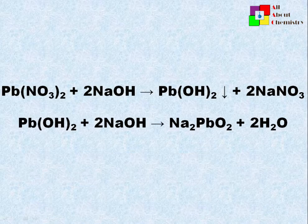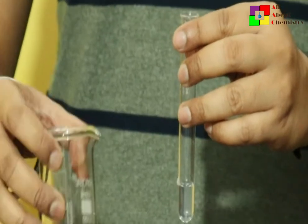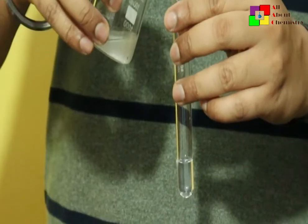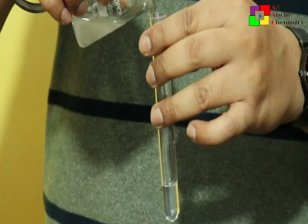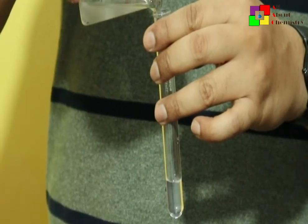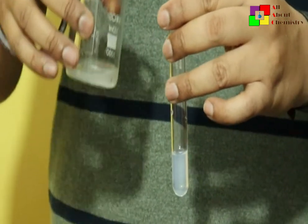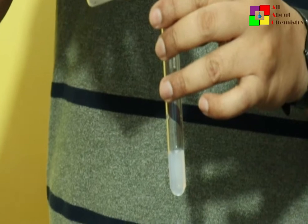When ammonium hydroxide is added to lead salts instead of sodium hydroxide, we initially get a chalky white precipitation. However, when excess ammonium hydroxide is added, this white precipitation does not get dissolved.